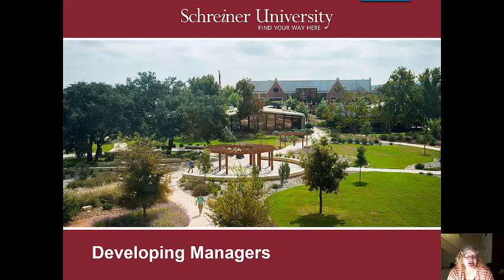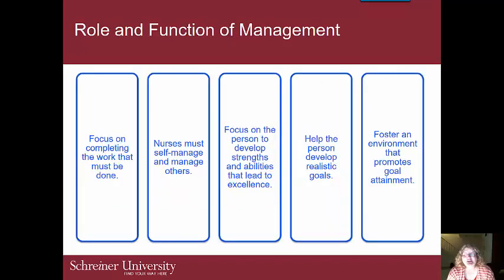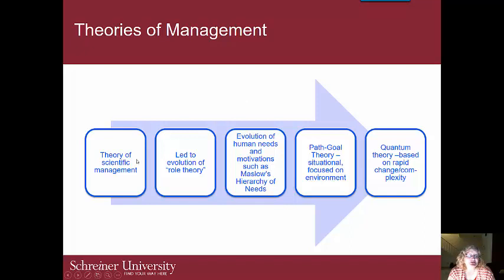Now we're going to look at how to develop as a manager. Managers, compared to leaders, have a formal role with formal authority. Management over the years has grown and developed a number of theories. First, we have scientific management, introduced by Frederick Taylor, called the father of efficiency. He began his work in the industrial revolution era and believed there was one best way to do something, and that people were motivated by financial rewards. His main goal was focused on being very efficient.